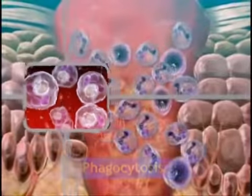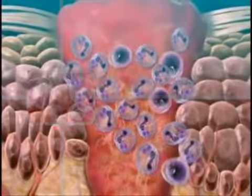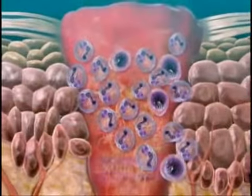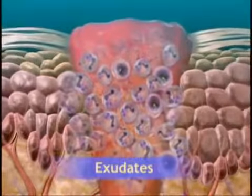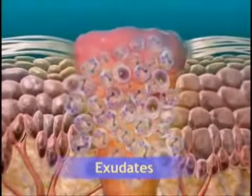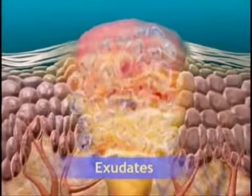Products of phagocytosis along with plasma and blood cells form exudates, which accumulate causing swelling and pain.